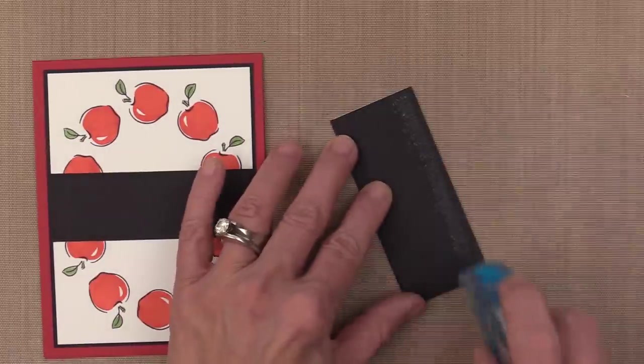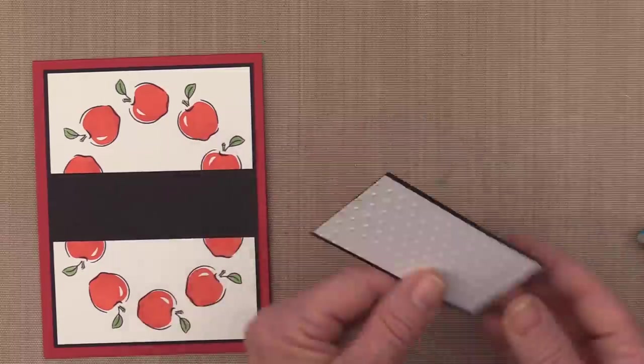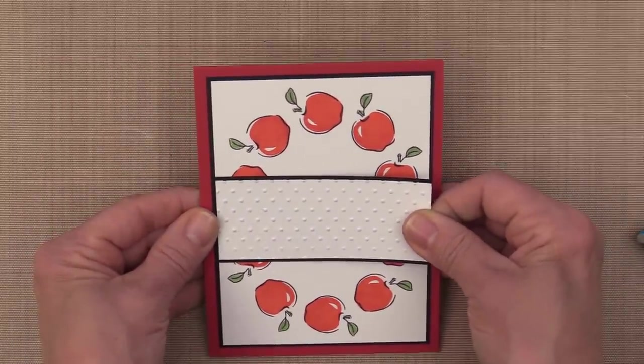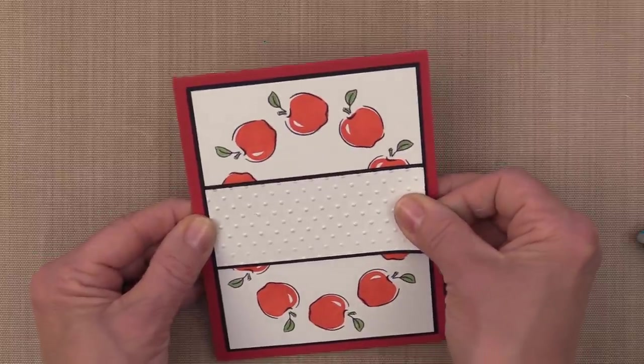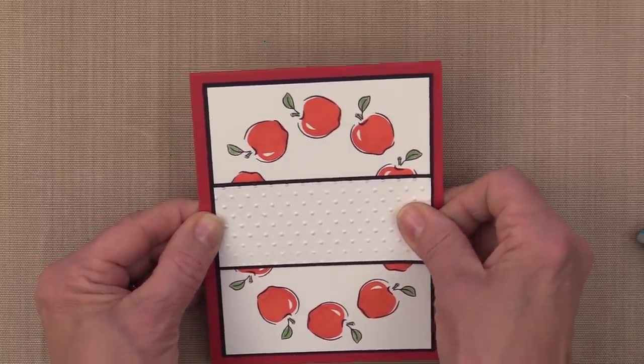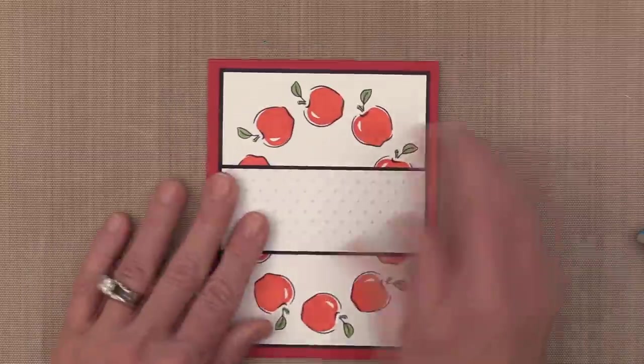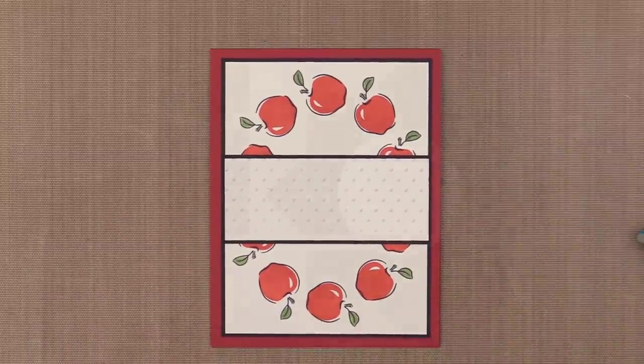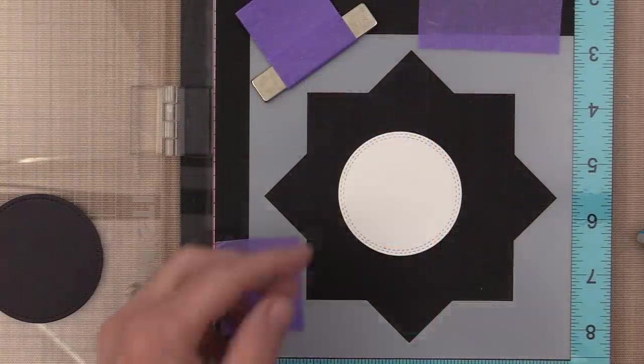Now I made a little decorative strip here and embossed that with a swiss dot cuddle bug embossing folder. You can use any embossing folder - there are so many beautiful ones out there. I just happened to have that one close by. I'm going to put that right across that raw edge and press it down. That covers up all of that gap in between and makes it look like an oval wreath.